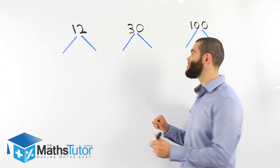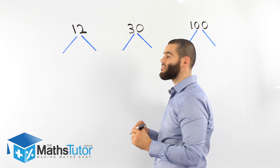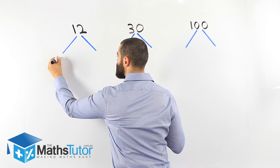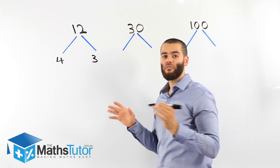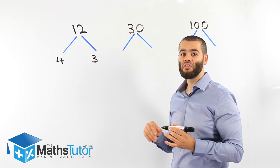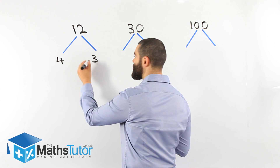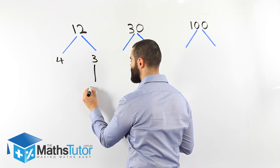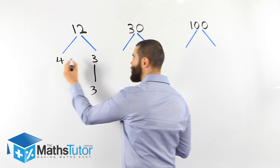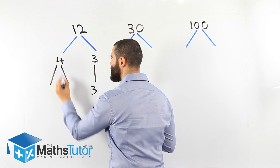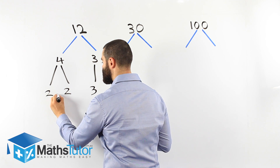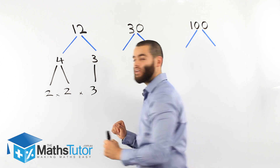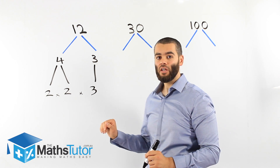We want to find the prime numbers that multiply to make 12. Let's choose the factors four and three. Whatever factors you choose — whether four and three or two and six — you'll always get the same result at the bottom. Three is a prime number, so it stays as three. Four is a composite number, so it gets broken down into two times two. Two times two is four, four times three is twelve.